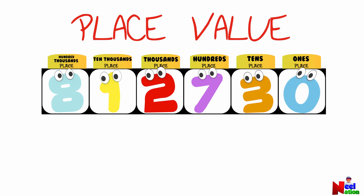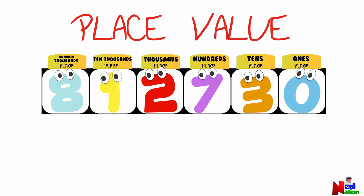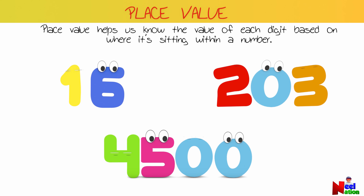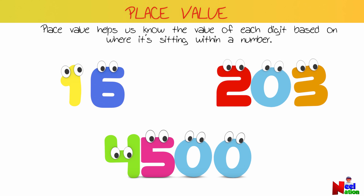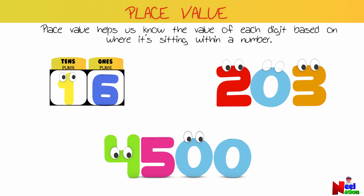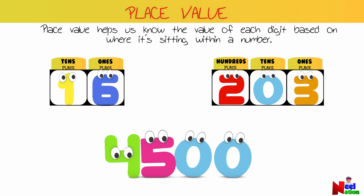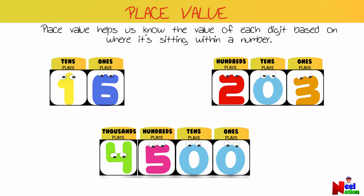In this number, each digit holds a unique place value determined by its position within the number. Place value helps us know the value of each digit based on where it's sitting within a number. In other words, place value is a way of understanding and representing numbers by looking at the positions or place of each digit within a number.